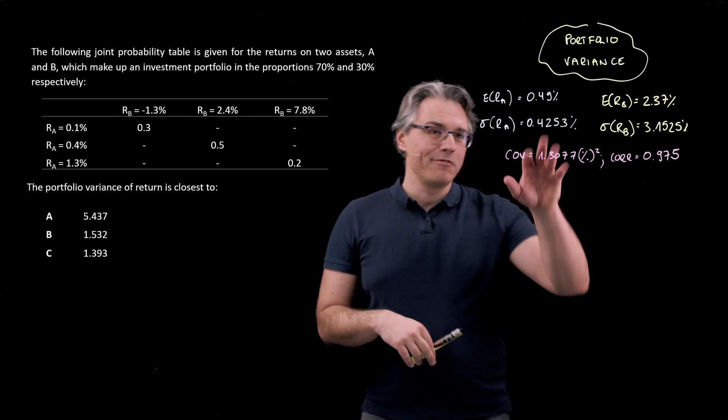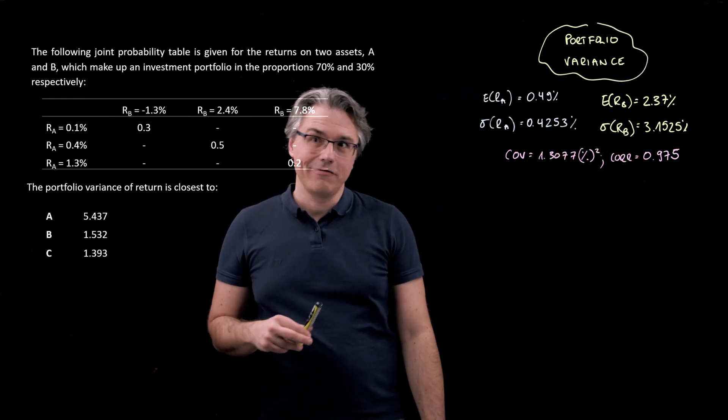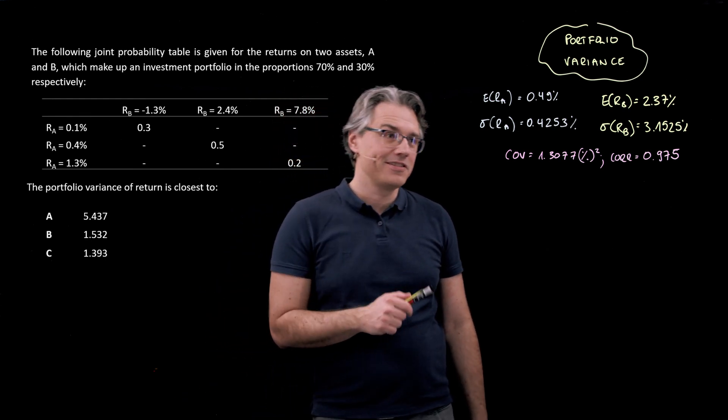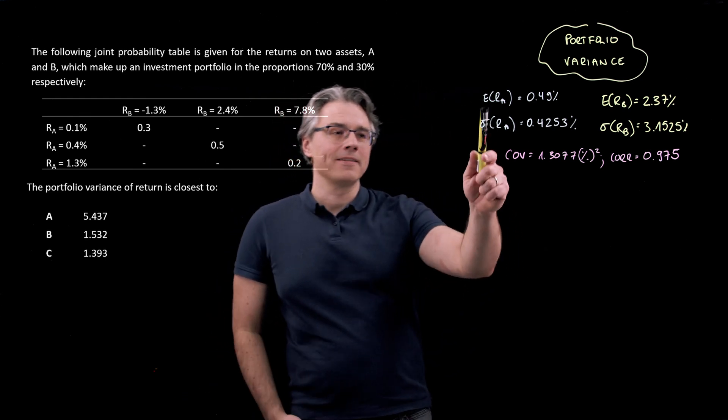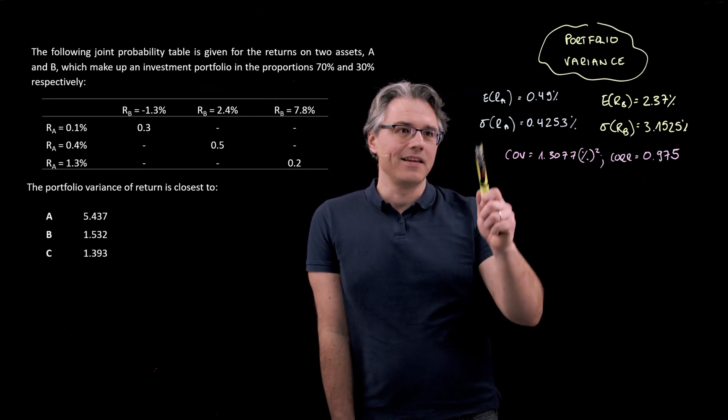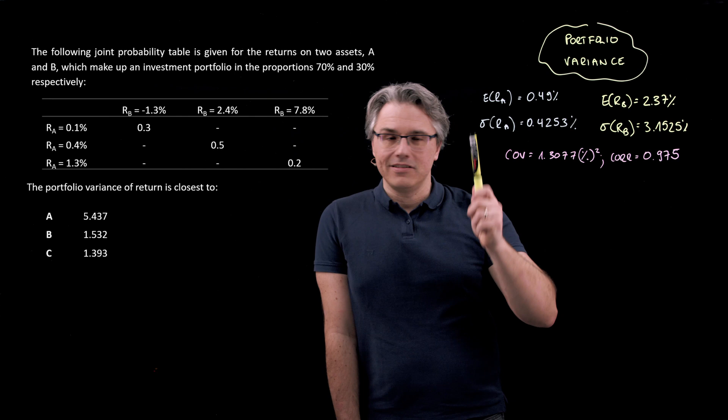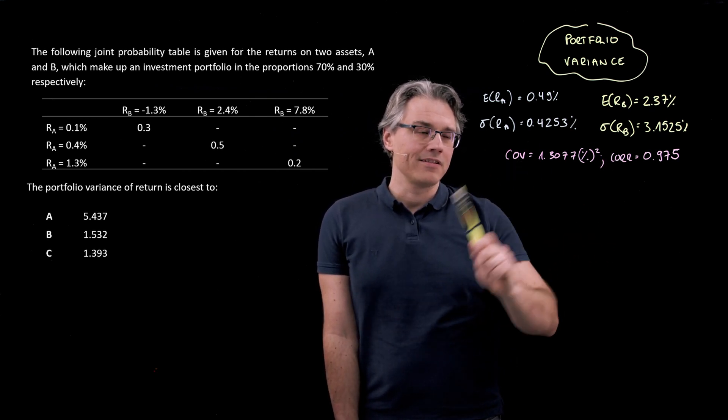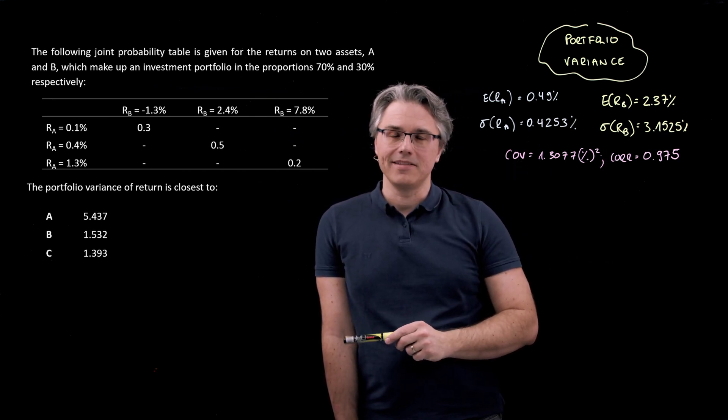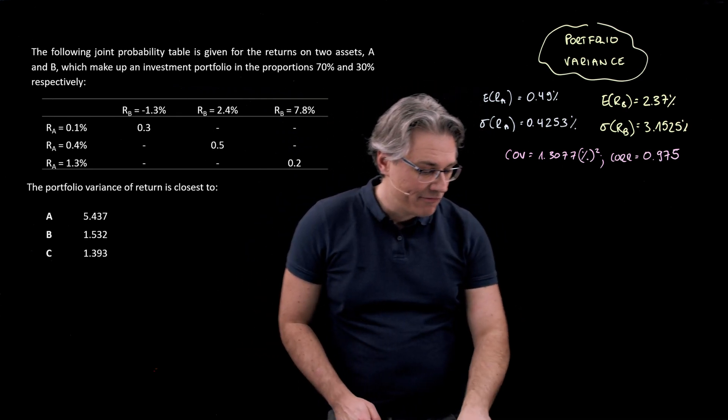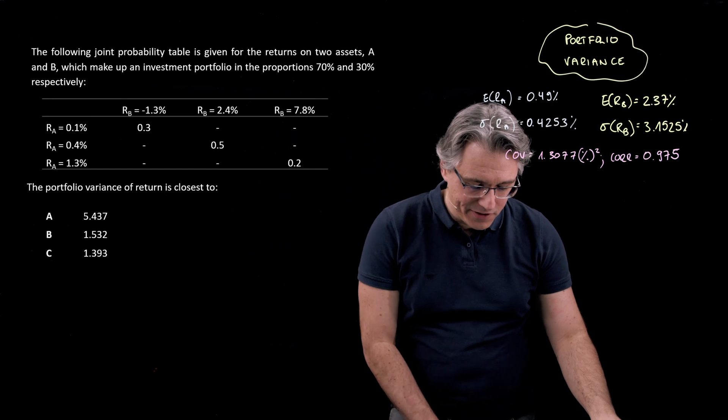I've written out data from the previous three questions that we did on this topic. We've got the expected returns of both assets, their standard deviations of return, and ultimately, what we did in the previous question was the covariance and correlation of those two assets' returns. Now we can put that all together to compute variance of portfolio returns.